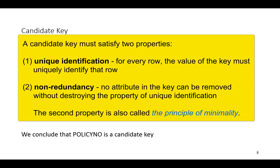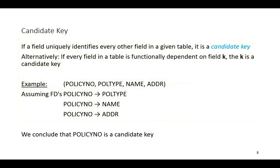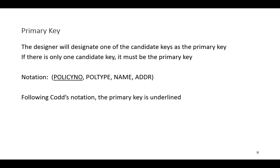The first property implies that each non-key attribute is functionally dependent on the key. Additionally, because a candidate key serves as a method of identification, it follows that the candidate key cannot be null. So ideally, a candidate key for a relation should not change value over time.